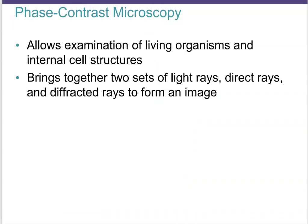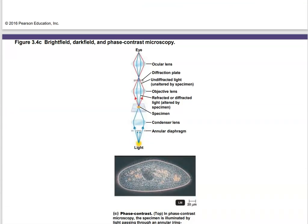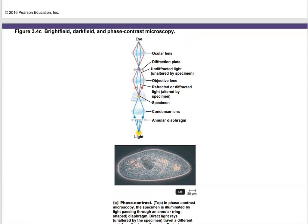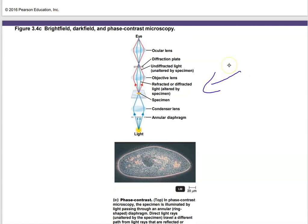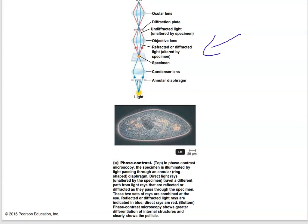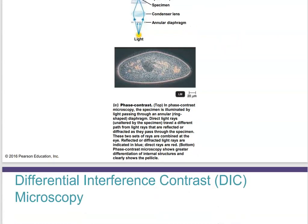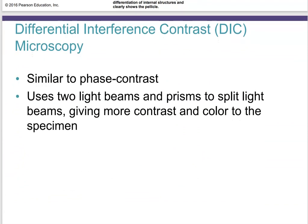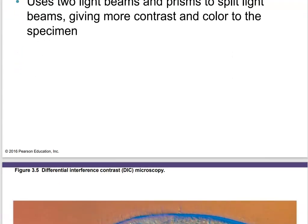Phase contrast microscopy gives you a better idea of the depth of an organism — you can appreciate the depth of the object you're looking at, giving almost a 3D experience. You don't need to know the path of light for this. Take a look at these images — phase contrast gives a nice contrasting, almost three-dimensional impression.